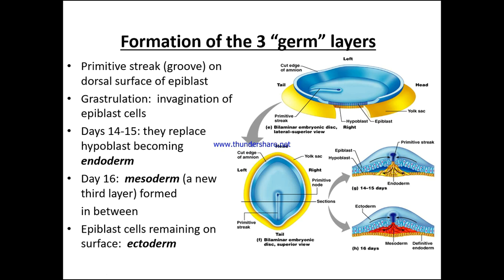Looking at these images: the bilaminar embryonic disc in lateral-to-superior view shows the hypoblast, epiblast, region of the head, and region of the tail. From the overview we can see head, tail, left and right regions, the yolk sac, and the cut edge of the amnion. From days 14 to 15, we see the primitive streak and endoderm, and progressing to day 16, we have the mesoderm and definitive endoderm forming.